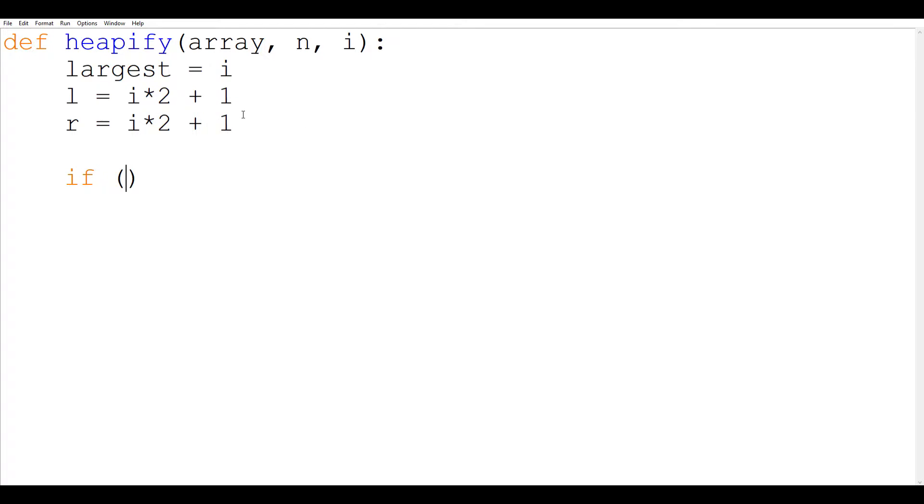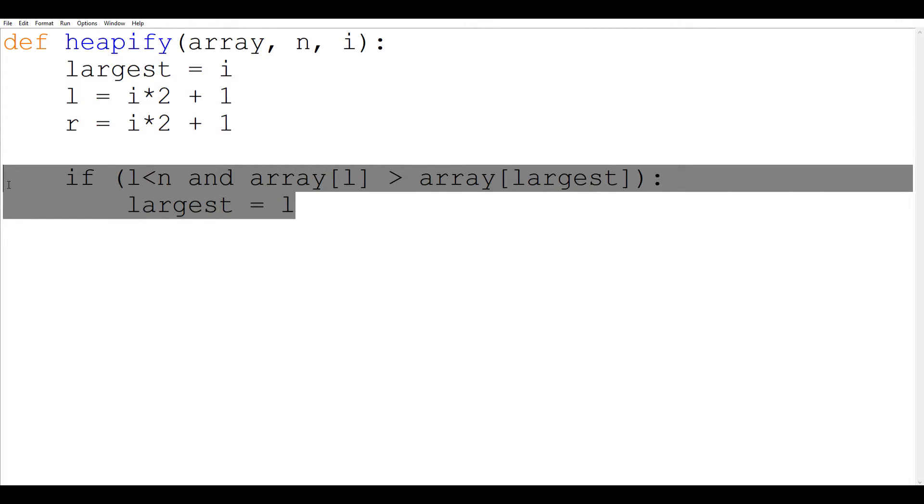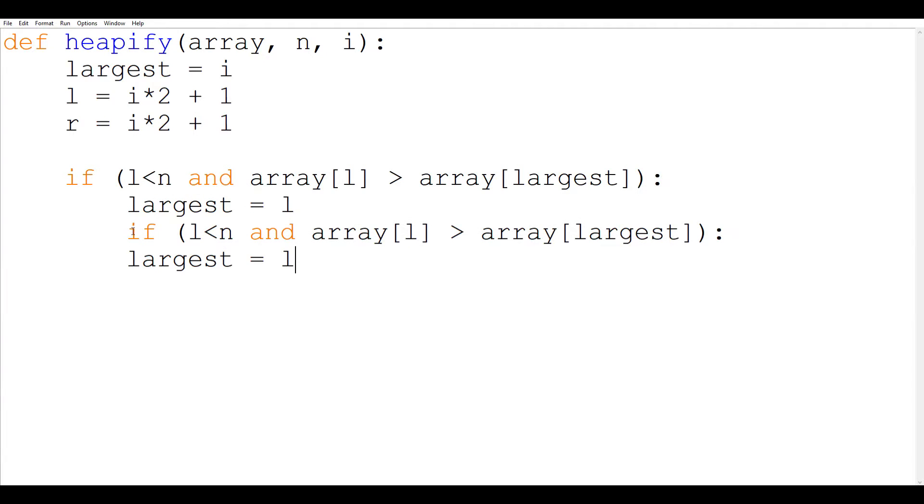So first let us compare the left child with the parent. So if l less than n and array of l greater than array of largest, then we are going to assign largest with the value of l. And the same goes for right. If right is less than n and array of right is greater than array of largest then largest will be r.